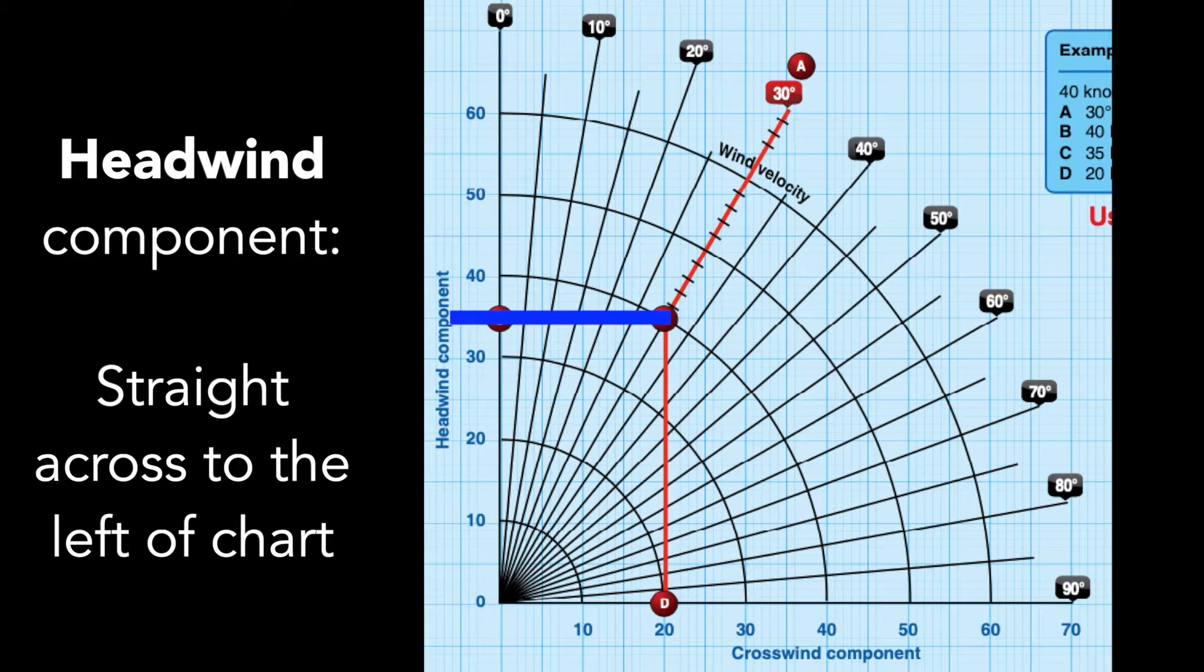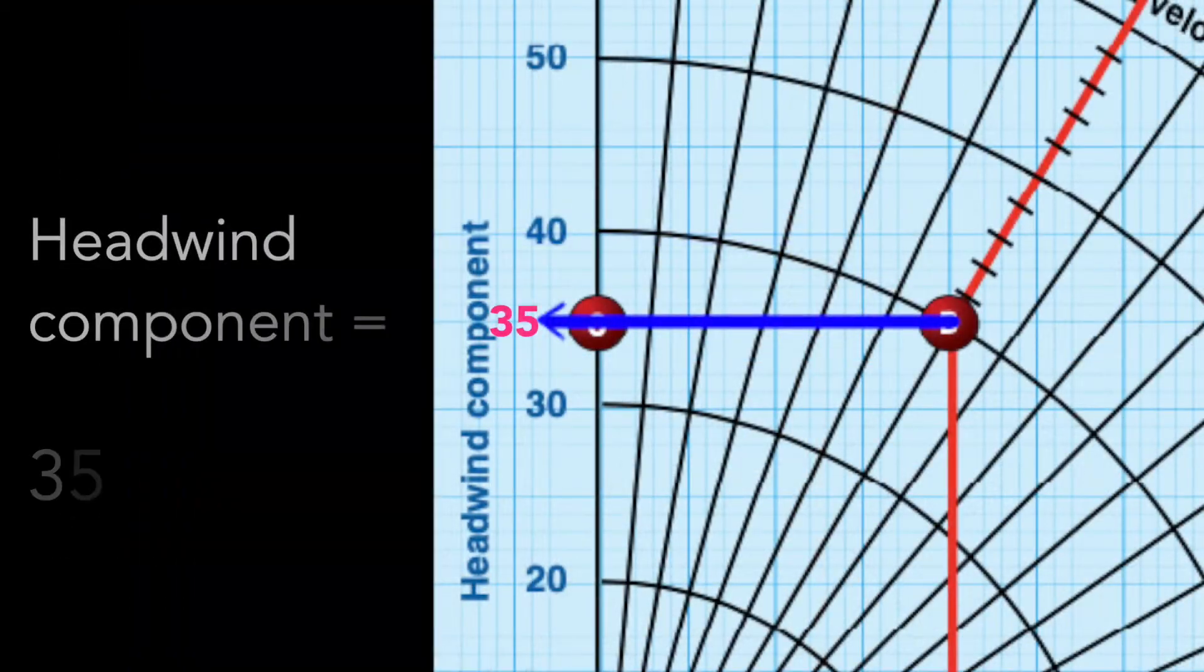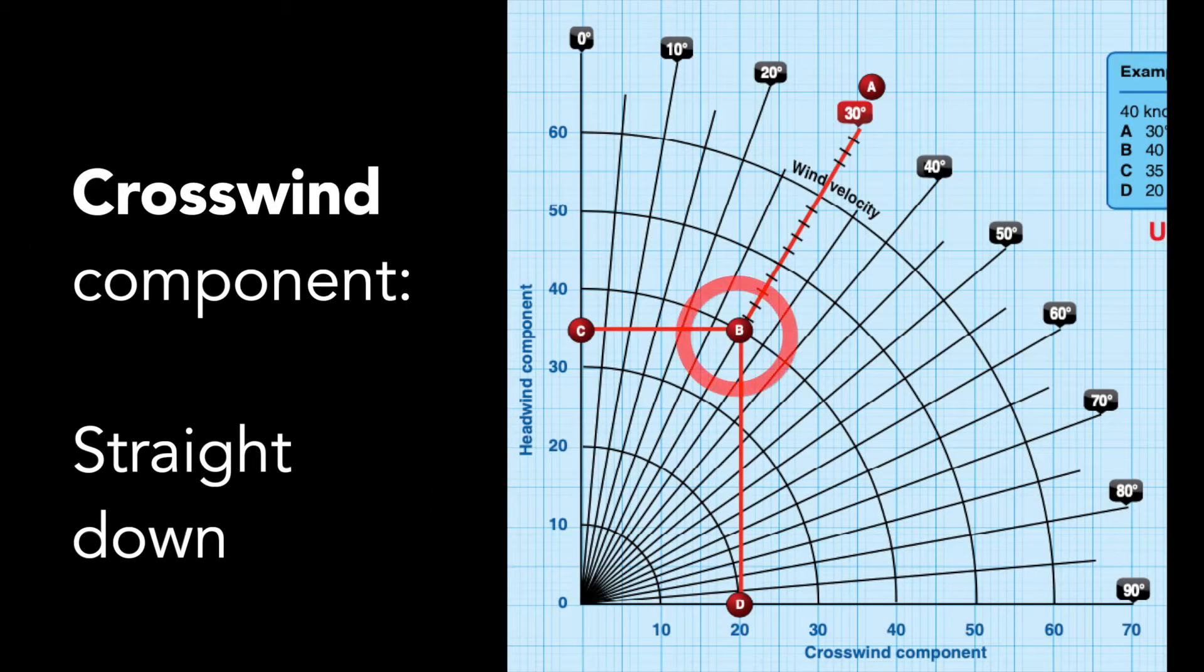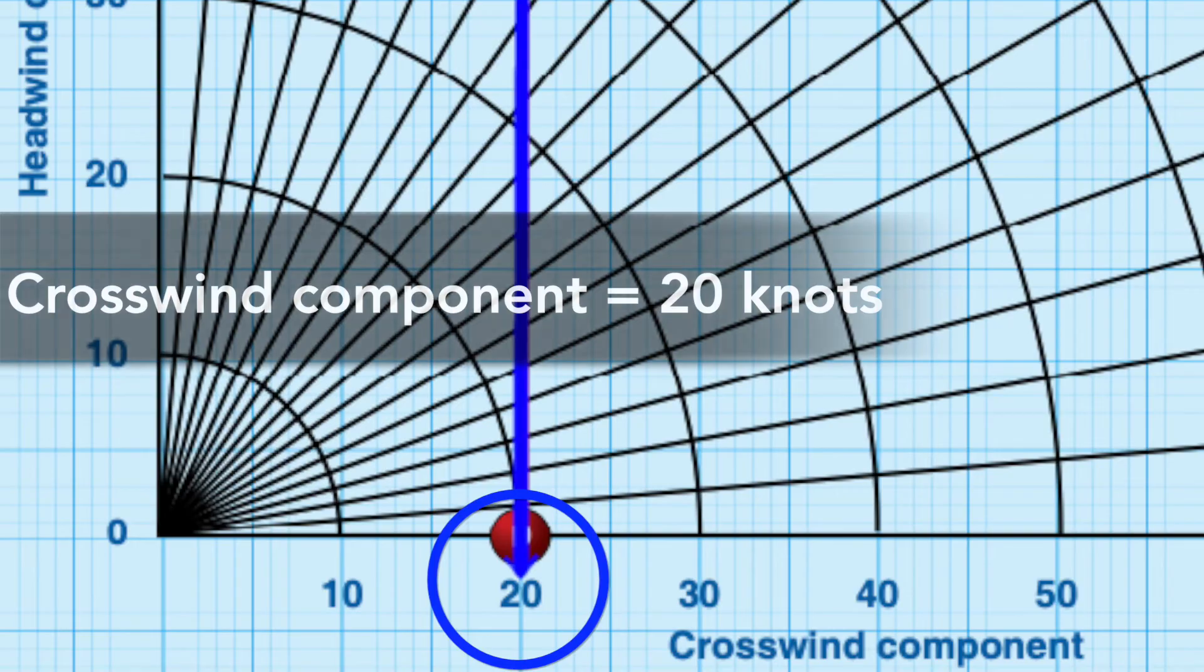This will lead us to a headwind component of 35 knots. To get the crosswind component reading, draw vertically downwards from this point. It looks like it gives us 20 knots there. That's really all there is to this graph.